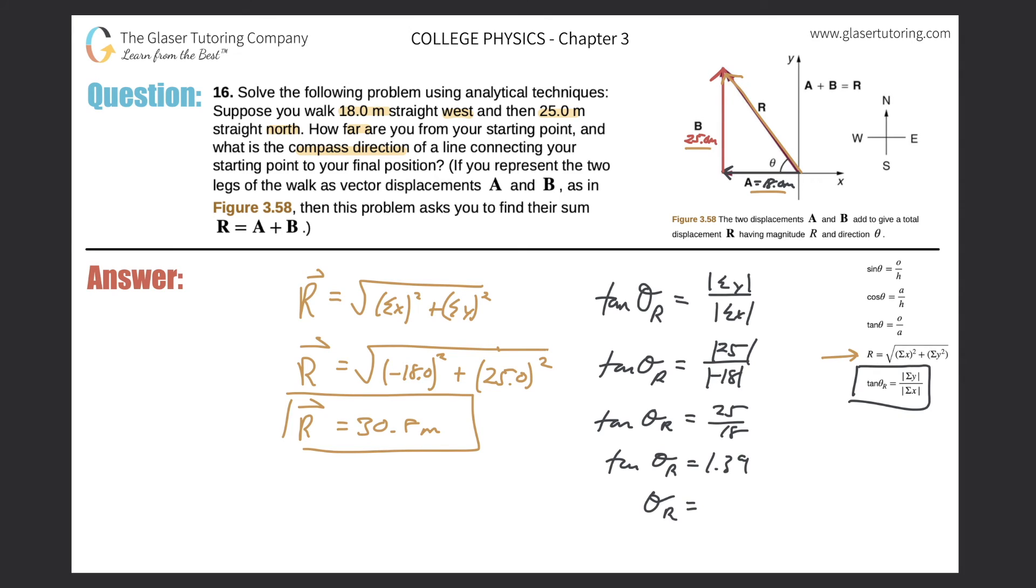And we get a value of about 54.3 degrees. Now we just have to say, you know, from where? 54.3 degrees from where? So we would say north of west, right? Because here's the west axis and the resultant vector is north of that west axis. Great, so that would be the full answer there.